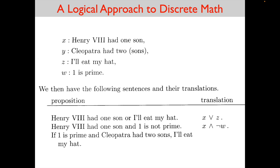'If one is prime and Cleopatra had two sons, I'll eat my hat' — that comma is like saying 'if one is prime and Cleopatra had two sons then I'll eat my hat,' so this is an if-then. One is prime is w, Cleopatra had two sons is y, connected with 'and' gives w ∧ y, then implies z. So the expression is (w ∧ y) → z. That's the general method of translating from English to boolean expressions.